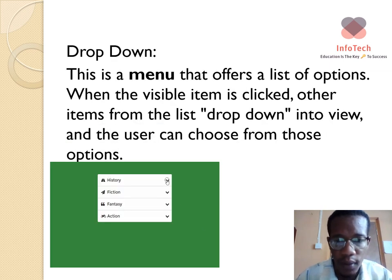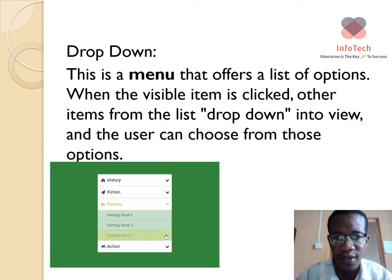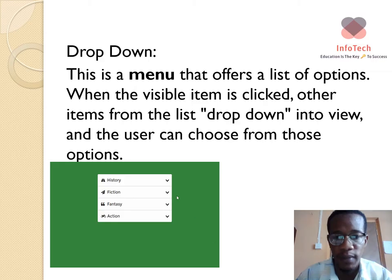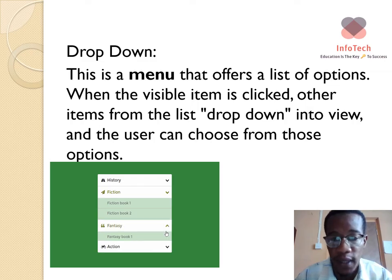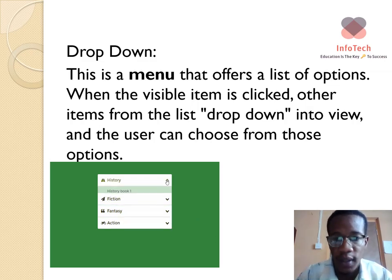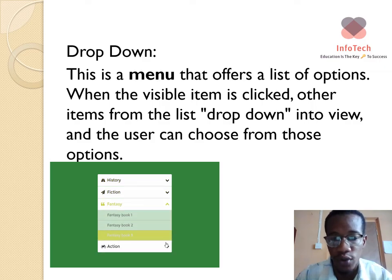The drop-down menu offers a list of options. When selected, visible items and other options from the list drop down, and users can choose from those options.